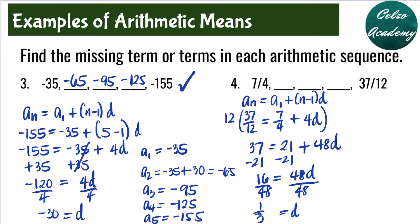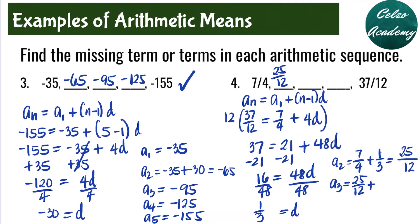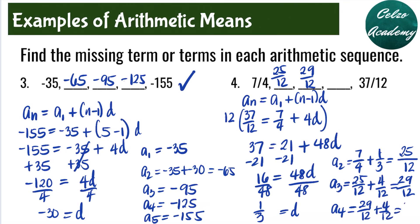Our first term is 7 over 4. To find the second term, we add 7 over 4 plus 1 third. Using a common denominator of 12, that is 21 over 12 plus 4 over 12, which equals 25 over 12. The third term is 25 over 12 plus 4 over 12, which is 29 over 12. The fourth term is 29 over 12 plus 4 over 12, which is 33 over 12. So the three arithmetic means are 25 over 12, 29 over 12, and 33 over 12.